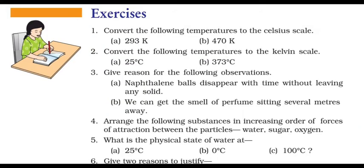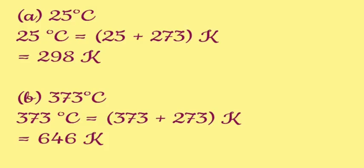Question 2: Convert the following temperatures to the Kelvin scale. The first one is 25 degree Celsius. 25 degree Celsius means 25 plus 273 is equal to 298K. The next one is 373 degree Celsius. 373 plus 273 is equal to 646K.